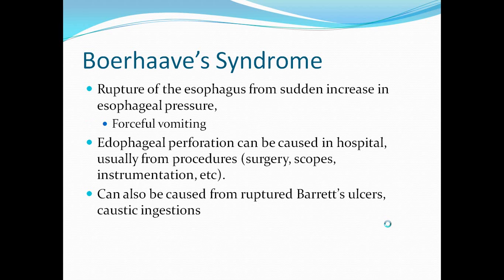Now we move on to a more serious condition: Boerhaave syndrome. This is the rupture of the esophagus from a sudden increase in esophageal pressure. Usually the presentation involves a large food bolus being taken in, followed by forceful vomiting. You'll often see it in cases of overeating or drinking binges. However, the majority of cases are actually caused in hospital from iatrogenic causes, including surgery, scopes, and instrumentation of any kind, such as a transesophageal echo or esophageal endoscopy.